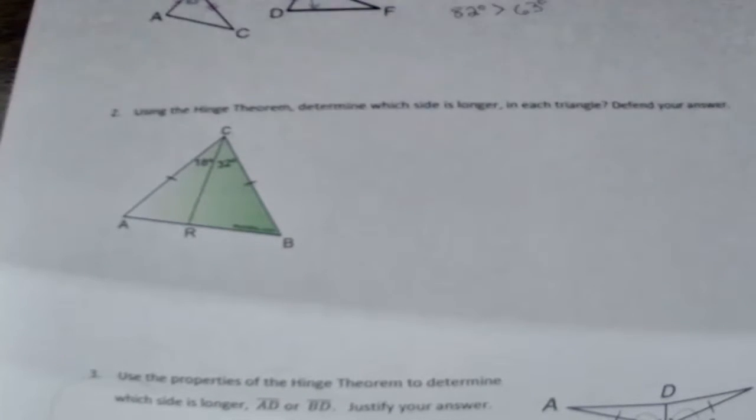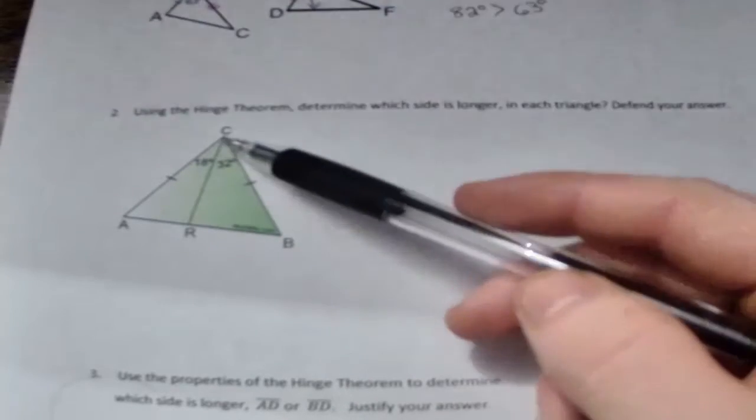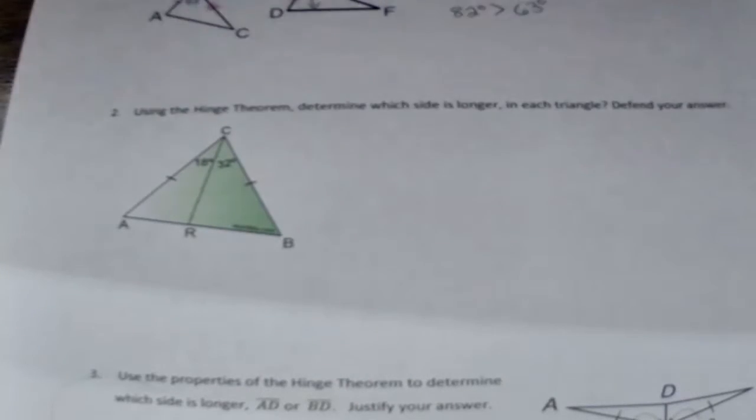Okay, so now number two: using the Hinge Theorem, determine which side is longer in each triangle. Defend your answer. So in order to use Hinge Theorem you have to have two sides congruent. So we've been told AC and CB are congruent - that's one side being congruent to each other.